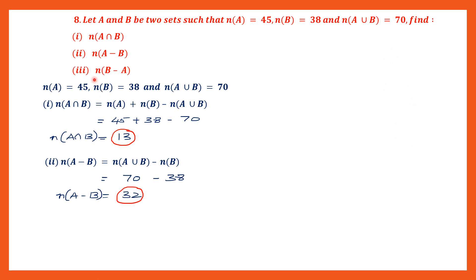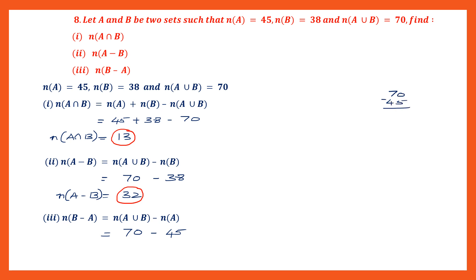Question 3: we have to find the cardinal number of B minus A. Using the formula: cardinal number of A union B minus cardinal number of A. Substituting: 70 minus 45. Borrowing: 10 minus 5 is 5, 6 minus 4 is 2 — giving us 25. We have found the cardinal number of B minus A, and the answer is 25.